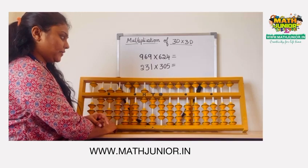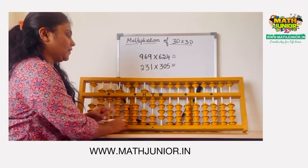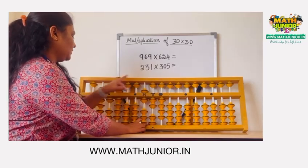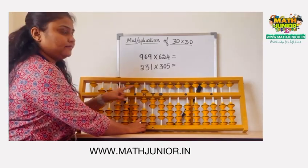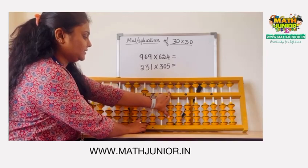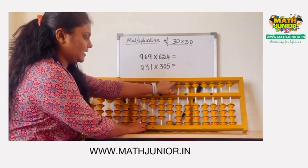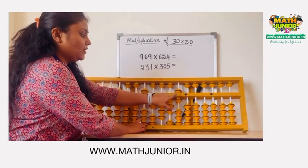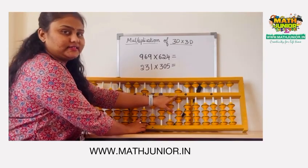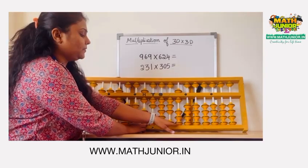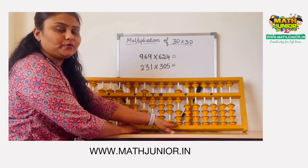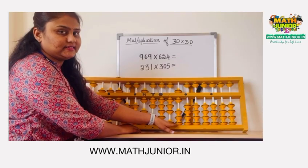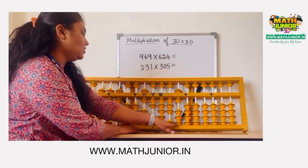Multiply outer rod into outer rod. 4 times 9 is 36. After the 4 place, 30 and 6. Where you place the 6, you should keep a finger on that rod, because we have to place the next answer from that rod.